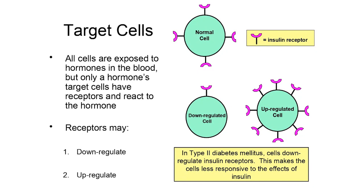Receptors for hormones can down-regulate — meaning decrease their numbers on the outside of a cell — or they can up-regulate — meaning increase their numbers. Receptors will down-regulate when they are exposed to chronically high levels of the hormone they bind, and up-regulate when exposed to chronically low levels. And this, believe it or not, is really what's responsible for the type 2 diabetes mellitus problem that we have in our country right now.